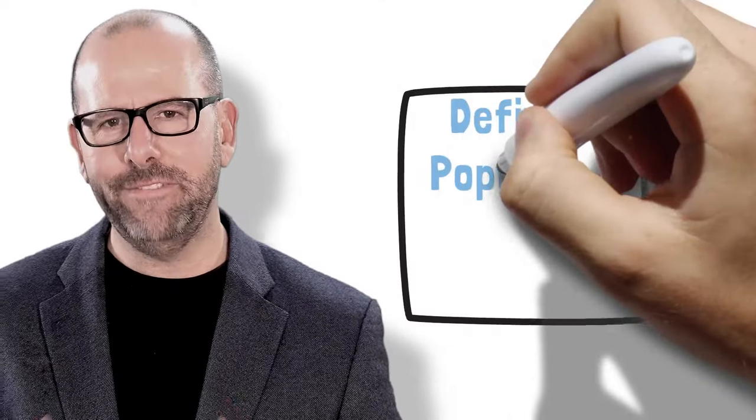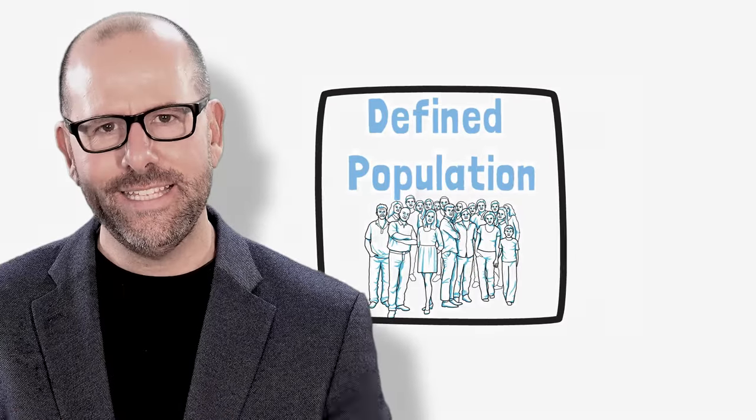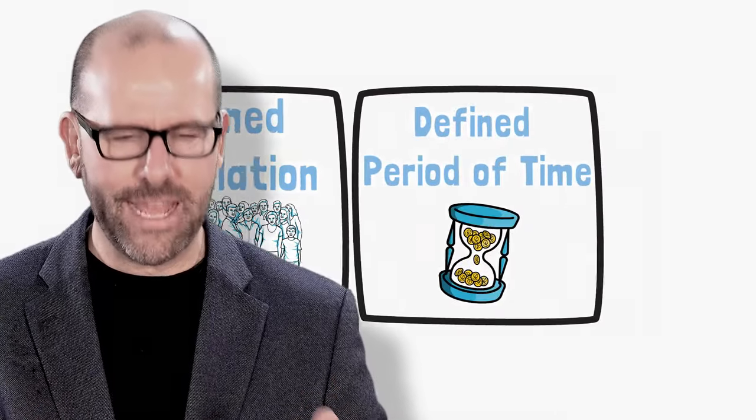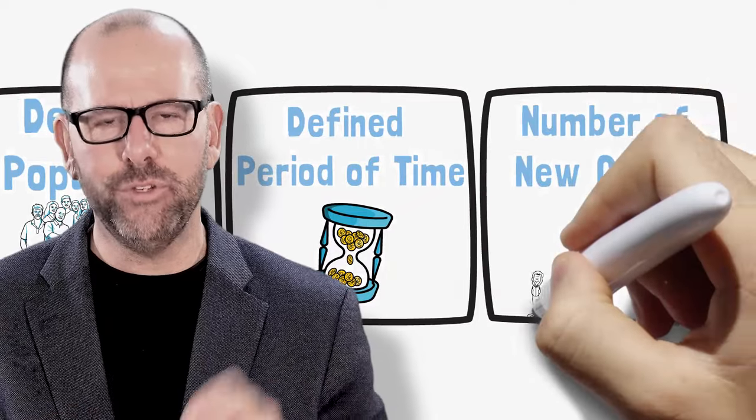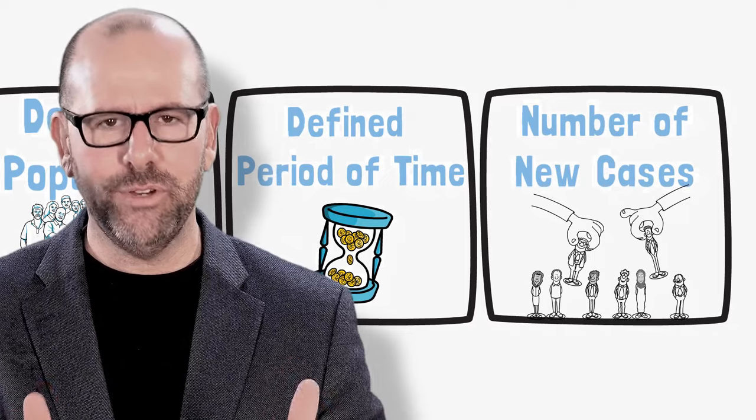To calculate risk, we really just need three things. Firstly, we need a defined population that we consider to be at risk. Secondly, we need a defined period of time during which we consider them to be at risk. And thirdly, we need to count up the number of new incidents of this disease or this health state that we're interested in that happens during that period of time.